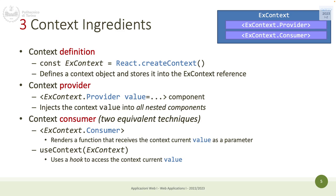First you create the context, then you say which component is the one that provides the value — the language, Italian or English — that is the single component that updates the value. Then you have all the components that consume this variable, read this value, and do something when it changes. You have one single way to define the context and one single way to provide a value.